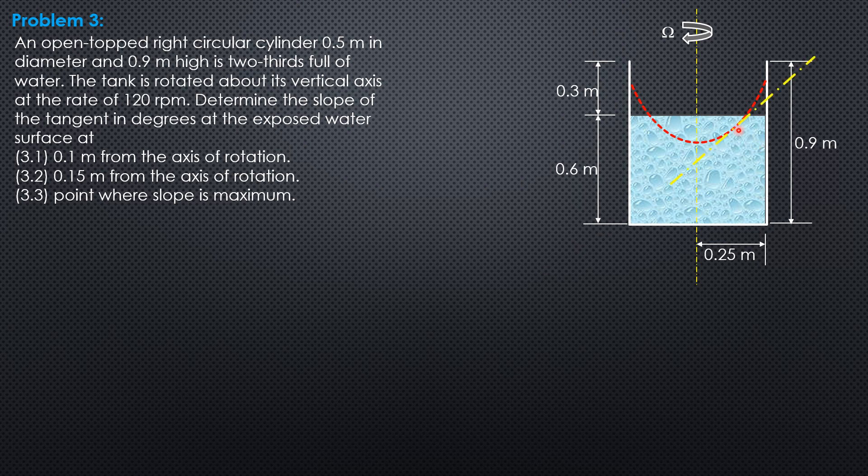Then in general, we draw the tangent at this point here. That's the required slope at the distance x in general. The formula for slope is tangent theta equals omega squared x over g. That's the general formula.